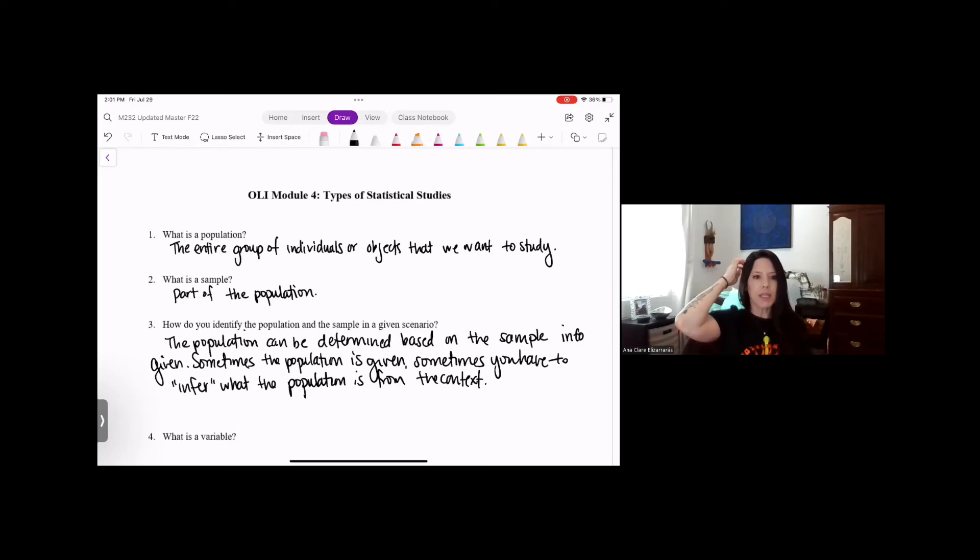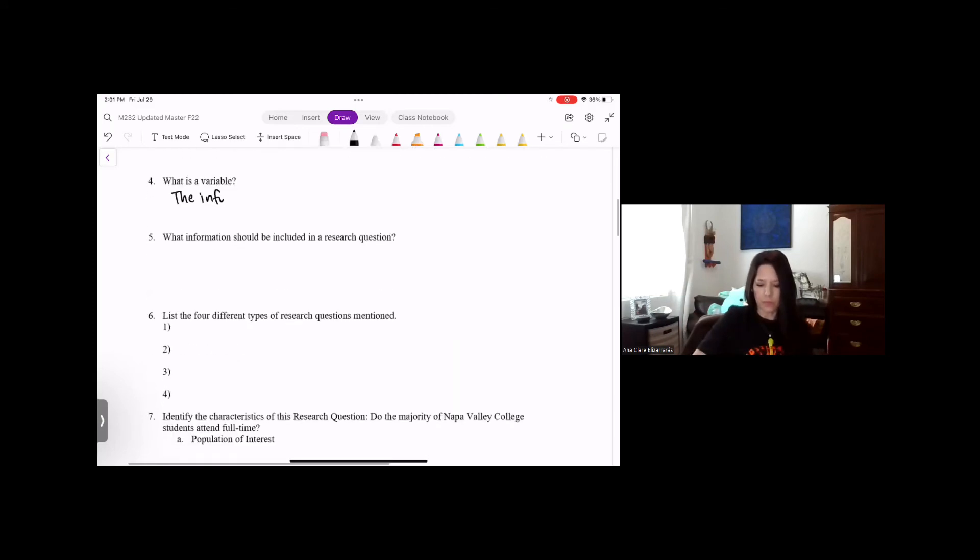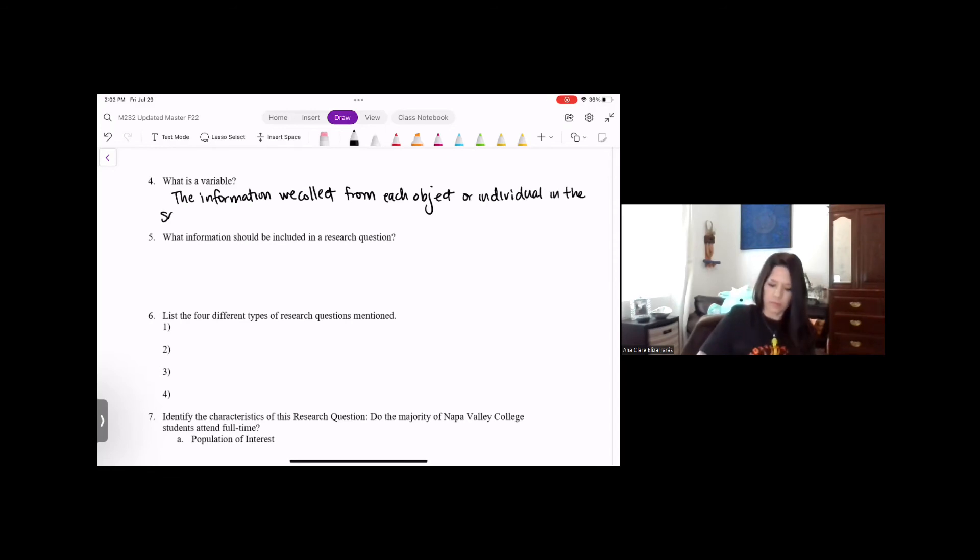A variable is what we plan to measure. It's the information that we are collecting from each individual or object in the sample. When we are writing a research question, it's important that you're including important information. There are three things that you should be including in a well-designed research question: the population that we're talking about, the variable we wish to measure, and the characteristic that goes with that variable.